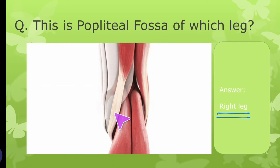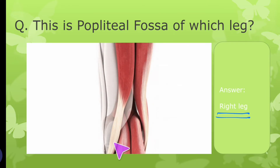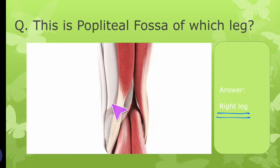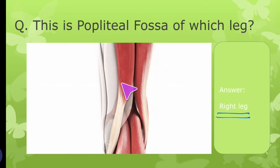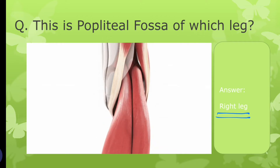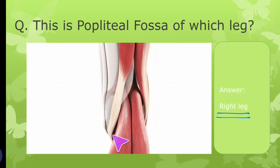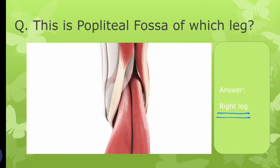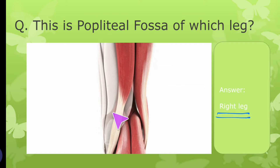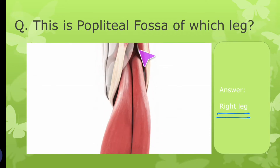Semitendinosus descends and inserts on the anterior surface of the medial condyle of tibia, along with two other muscles — sartorius and gracilis. All three are called 'guy ropes,' arising from three different parts of the hip bone: semitendinosus from the ischial tuberosity, sartorius from the ilium, and gracilis from the pubis. At their common insertion there is a bursa called the anserine bursa.